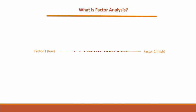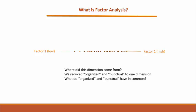So, to summarize, where did this dimension come from? We reduced the organized and punctual variables to one dimension. So, now we ask, what do organized and punctual have in common? What allowed us to put those together into one dimension? We refer to this process as labeling the new dimension or the factor.